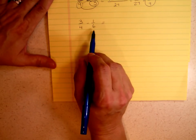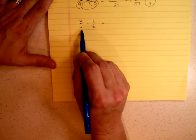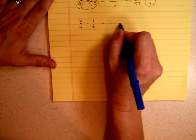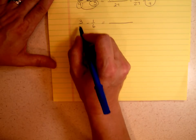6 isn't a factor of 4, and 4 is not a factor of 6. So I'm going to go ahead, and I'm going to use my alternate algorithm.